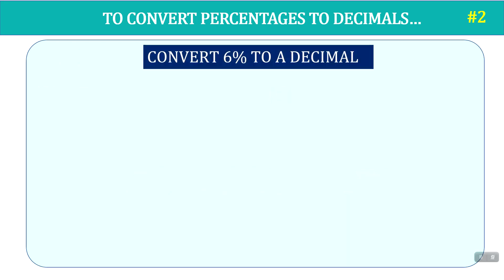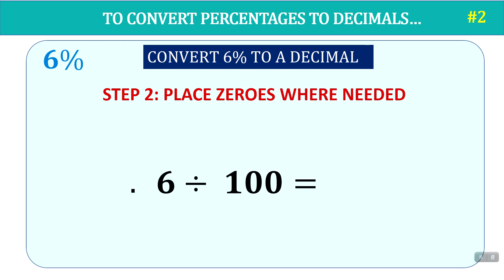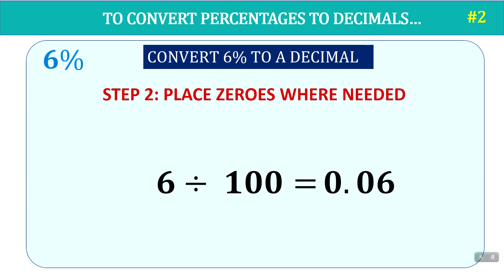How about a small percentage like 6 percent? Step one: divide by 100, moving the decimal point two places to the left — one, two — there's the decimal point. Now we place zeros where needed; there is a zero missing in two spots. So our answer is 0.06. Six percent is not 0.6, but 0.06.